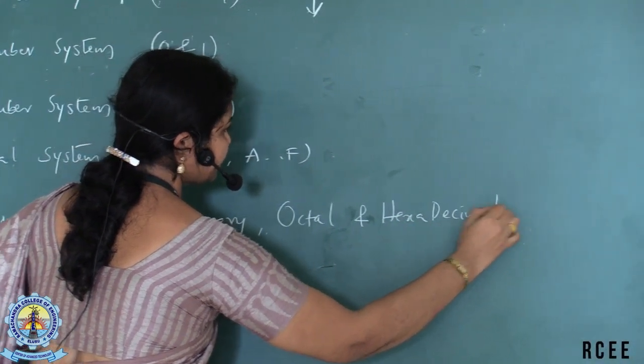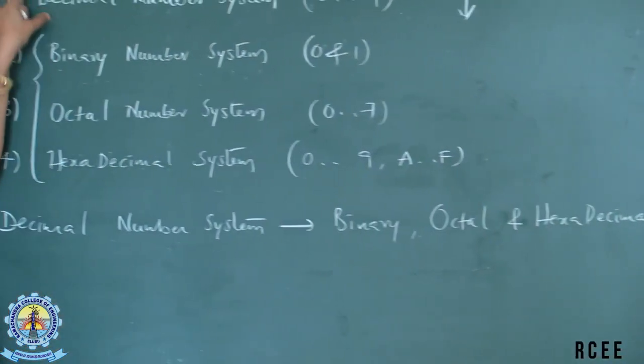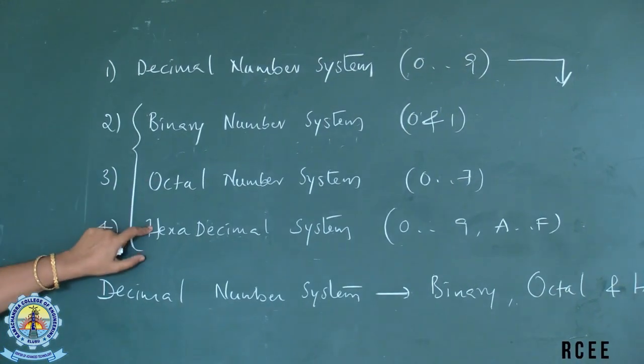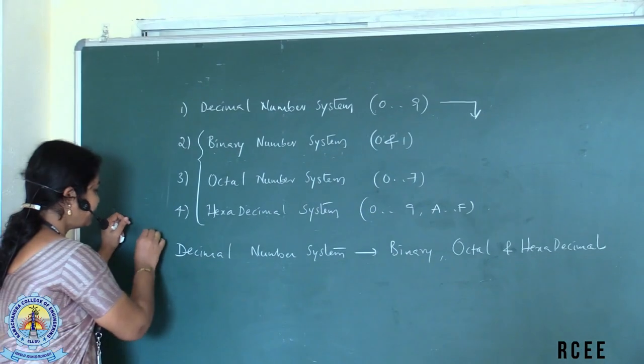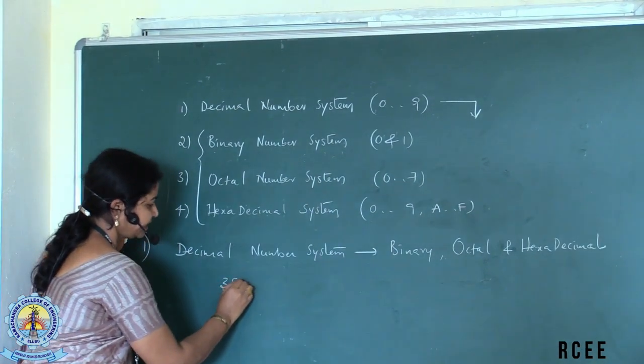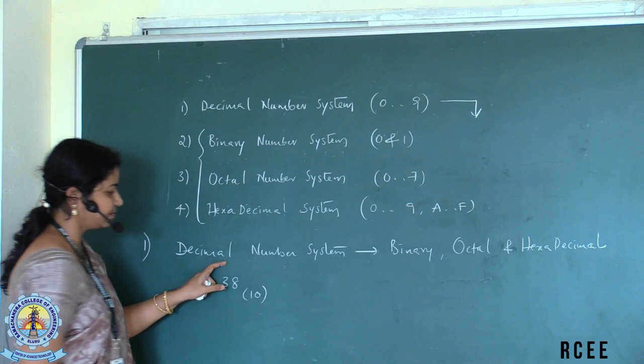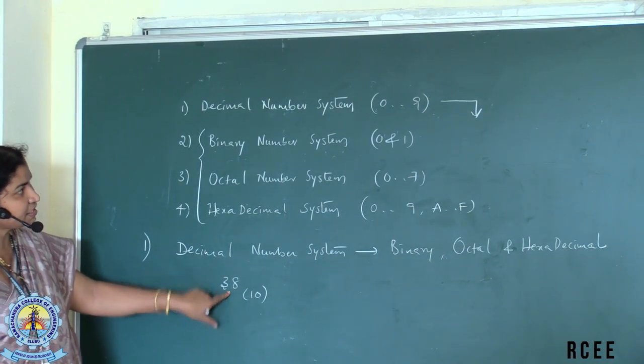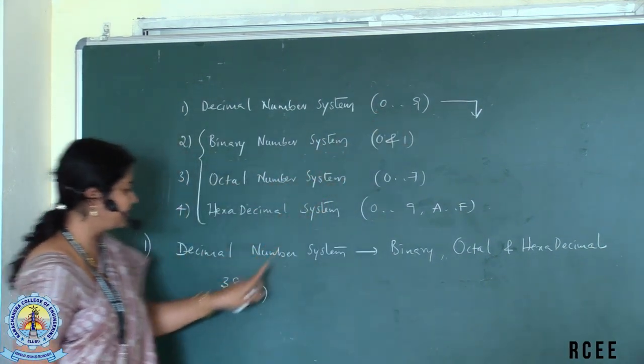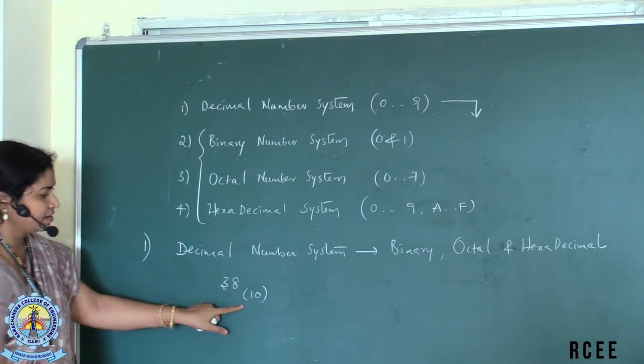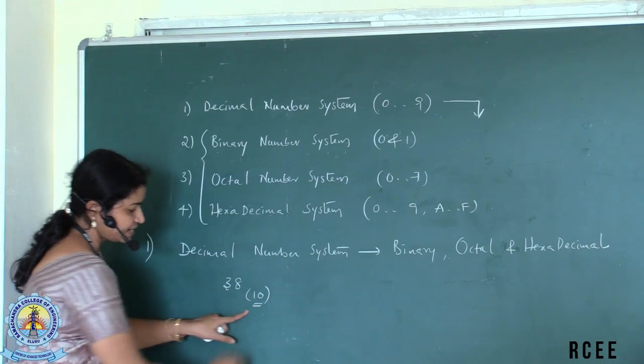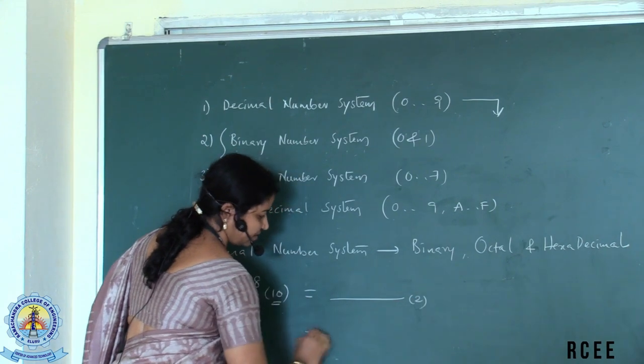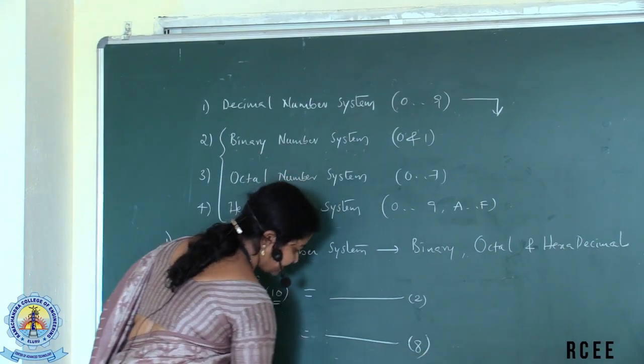Let us first see the conversions from decimal to binary, octal, hexadecimal, from binary to decimal, octal, hexadecimal and so on. So the first example we will take is 38 to base ten as a decimal number. This is the decimal number because if you observe you can see only the digits in between 0 and 9 are being used to represent the decimal. Decimal means base ten, the radix. Now, we will be converting this into binary, octal and hexadecimal.